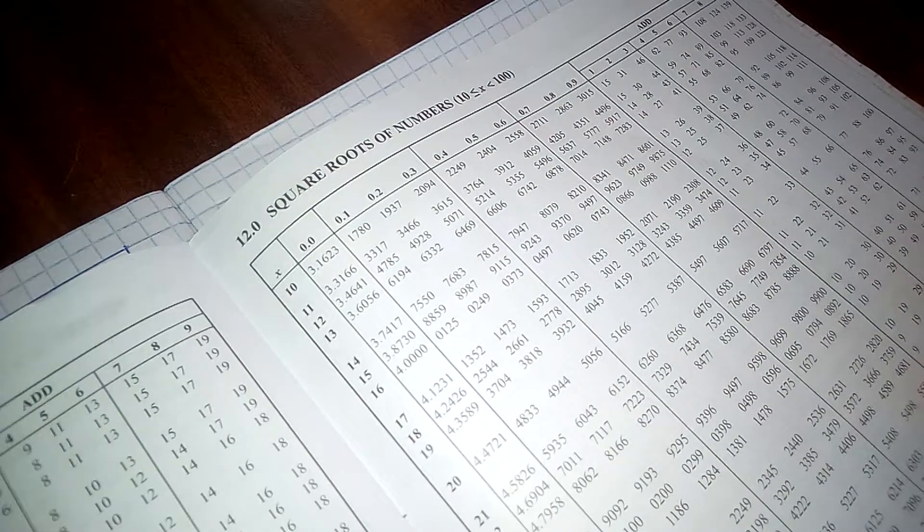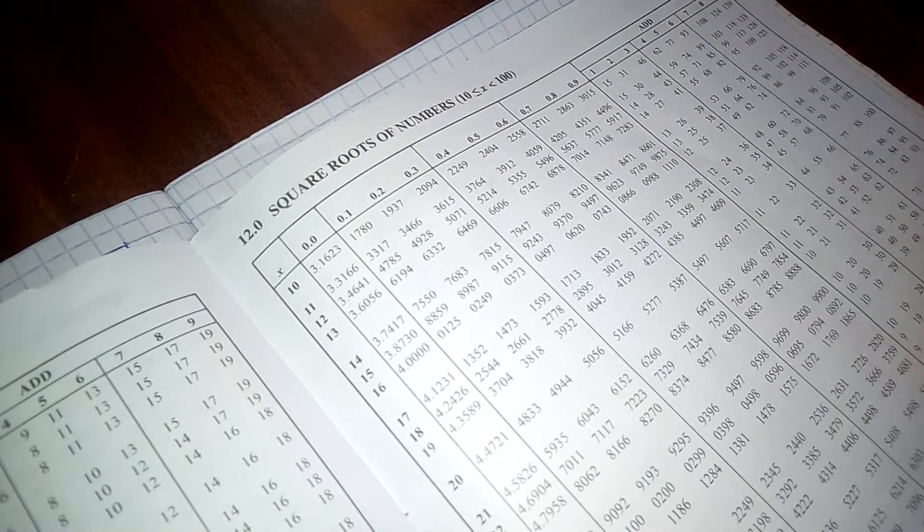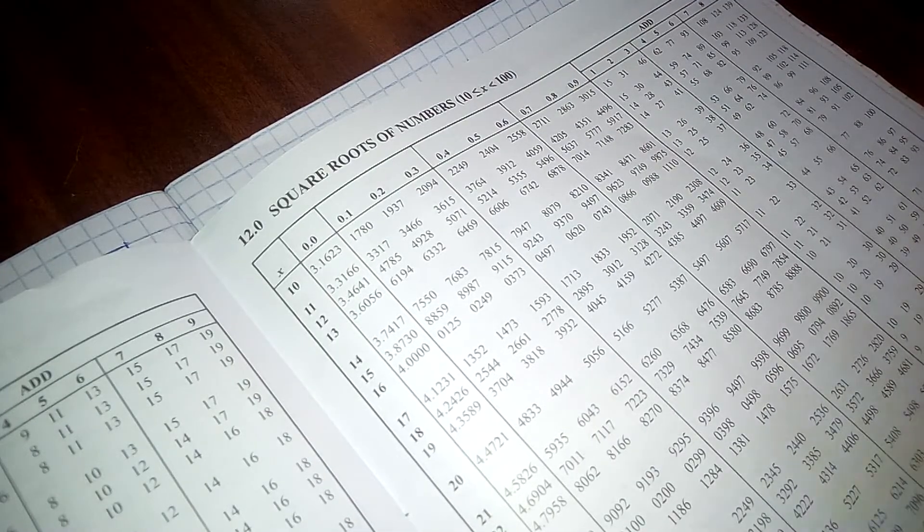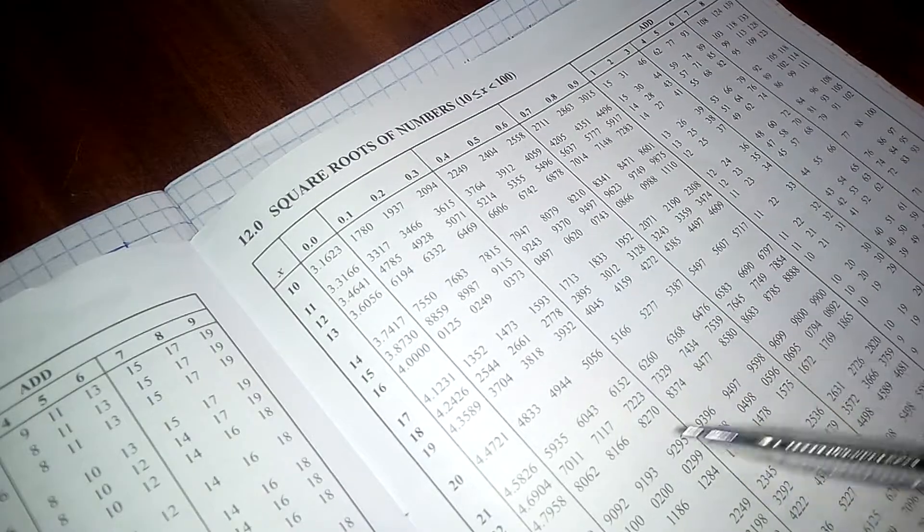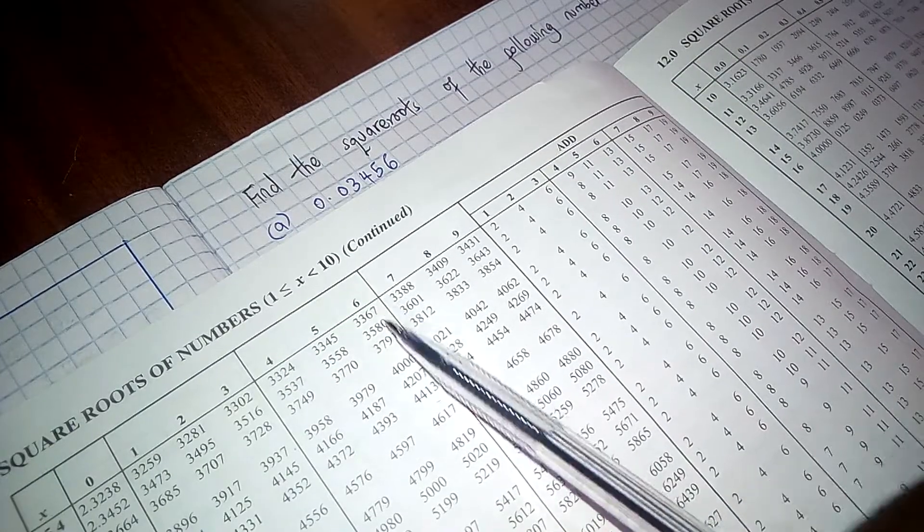But why do you think while we were finding squares we only had one range, but when we are finding square roots we are getting to have different ranges, the range of 10 to 100 and that of between 1 to 10.